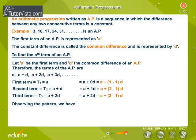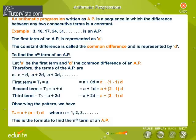Observing the pattern, we have Tn is equal to a plus (n minus 1) into d, where n is equal to 1, 2, 3 and so on. This is the formula to find the nth term of an AP.